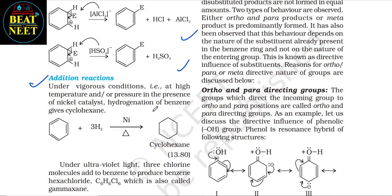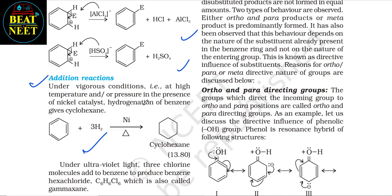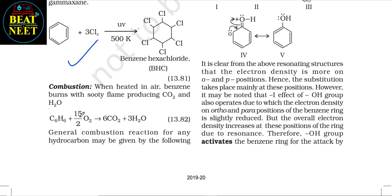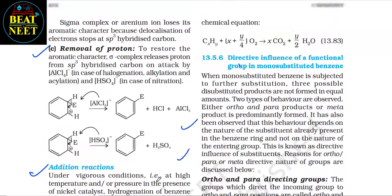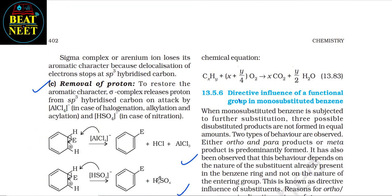Addition reactions: under vigorous conditions (high temperature and/or pressure, nickel catalyst) hydrogenation of benzene gives cyclohexane. Under ultraviolet light, three chlorine molecules add to benzene to produce benzene hexachloride (C₆H₆Cl₆), also called gammaxene (BHC). Combustion: when heated in air, benzene burns with a sooty flame producing CO₂ and H₂O: C₆H₆ + 15/2 O₂ → 6CO₂ + 3H₂O. A general combustion reaction for any hydrocarbon can also be given.